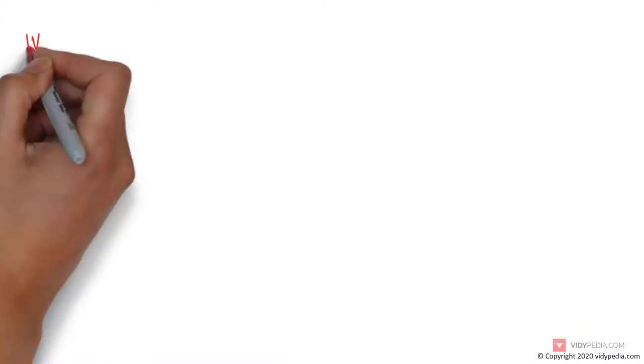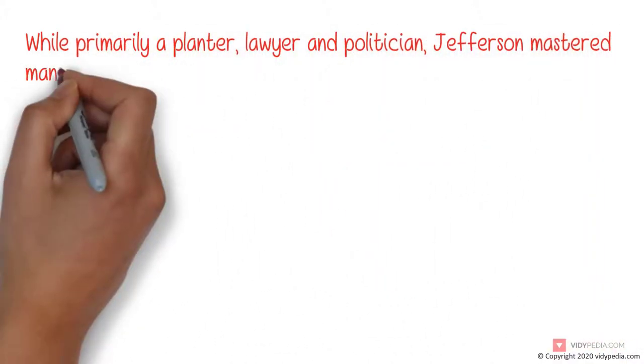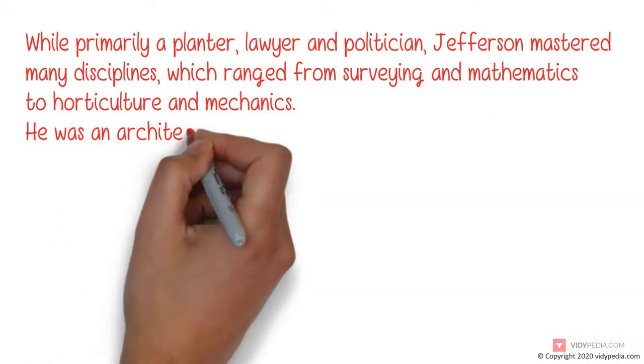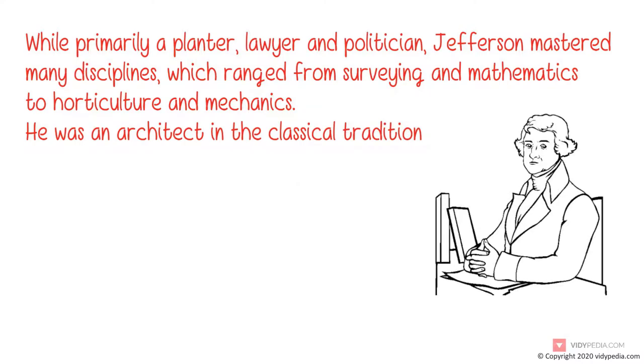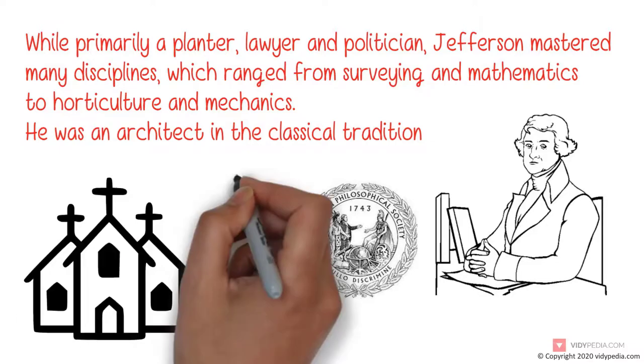While primarily a planter, lawyer, and politician, Jefferson mastered many disciplines, which ranged from surveying and mathematics to horticulture and mechanics. He was an architect in the classical tradition. Jefferson's keen interest in religion and philosophy led to his presidency of the American Philosophical Society. He shunned organized religion, but was influenced by both Christianity and deism.